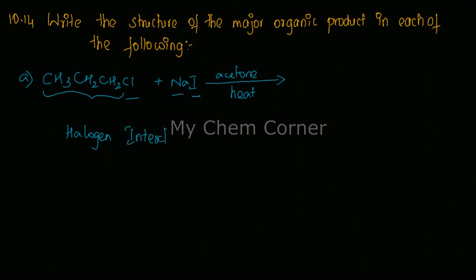So the equation is a very simple one. Iodide will go to CH2 and Cl will come to sodium. So this way you are going to have a halogen interchange in this particular reaction.